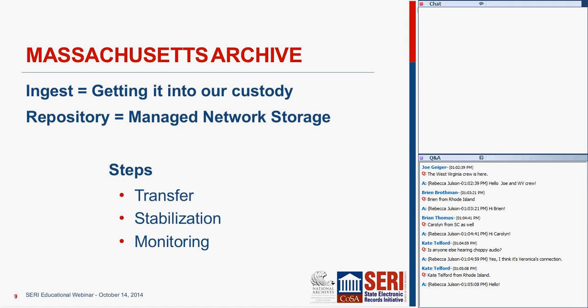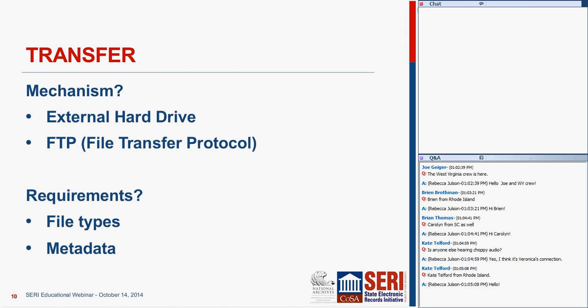Getting into the examples: with the Massachusetts Archives, I'll be starting from the point of just getting the materials into our custody and onto a managed network storage environment. The steps I'll be looking at are transfer, stabilization, and monitoring. With transfer, we're working with two possible options available to agencies: either utilizing external hard drives or using a file transfer protocol server.